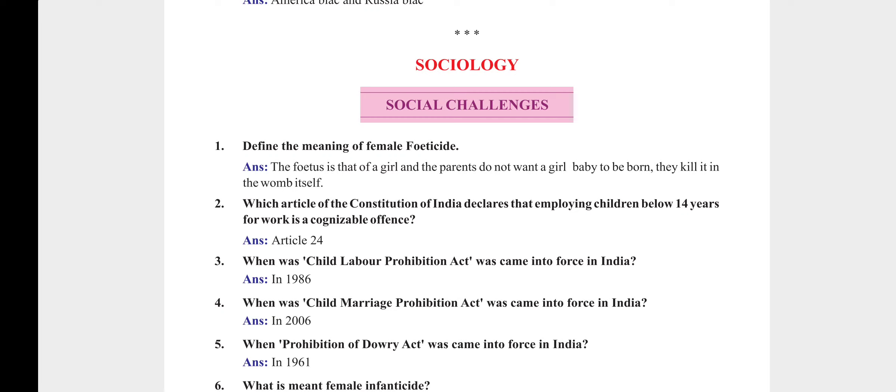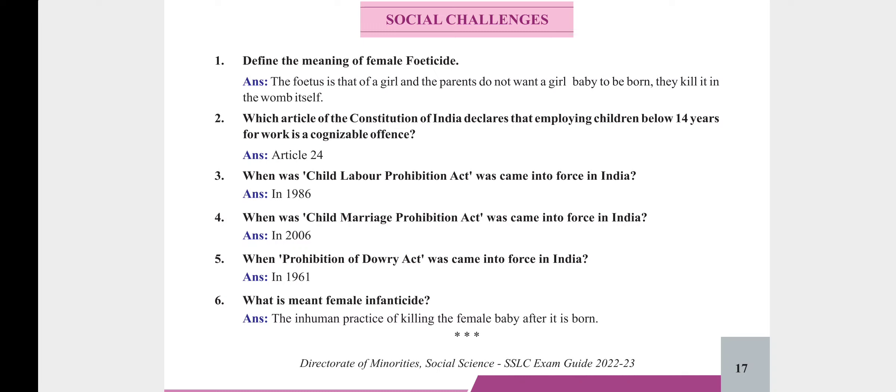Sociology — Social Challenges. Define female feticide: when parents who do not want a girl baby kill the female fetus in the womb before birth, it is called female feticide. Which article of the Constitution declares that employing children below 14 years of age is a cognizable offense? Article 24. When was the Child Labour Prohibition Act enacted? In 1986. When was the Child Marriage Prohibition Act enacted? In 2006. When was the Prohibition of Dowry Act enacted? In 1961. What is female infanticide? The inhuman practice of killing a female baby after birth.